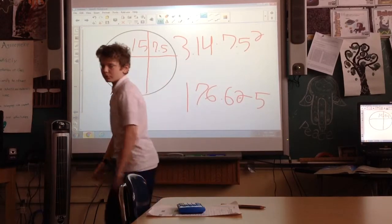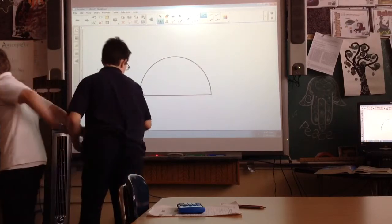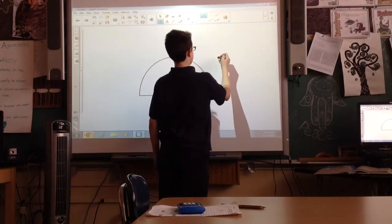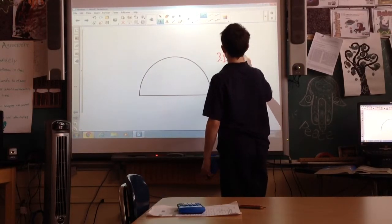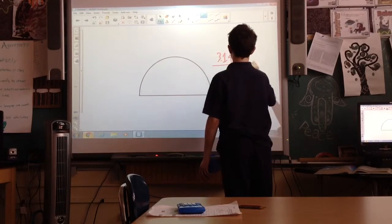Now we're going to do a demonstration if it gives you a semicircle. To find the area of a semicircle, you take 3.14, which is pi, multiplied by the radius squared, and then you have to divide it by 2.